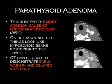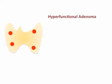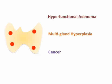On ultrasound, these are just going to look like a hypoechoic nodule posterior to the thyroid. So let's review parathyroid nukes. What causes hyperparathyroidism? The most common cause is a hyperfunctional adenoma. Two other causes worth knowing are multi-gland hyperplasia and cancer, in decreasing order of frequency.